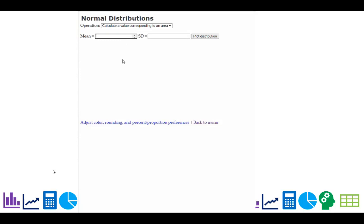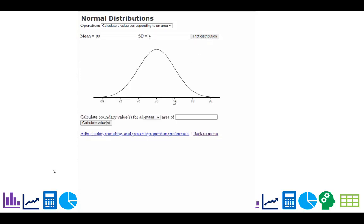We had a mean of 80 ounces and standard deviation of 4 ounces. You hit plot distribution and you can see it. So you can see the values for the empirical rule right there.